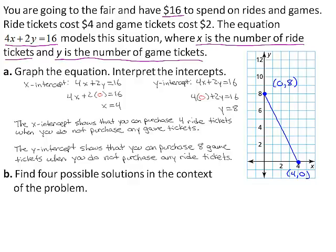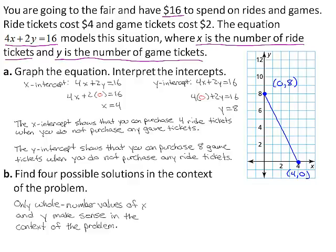Part B, find 4 possible solutions in the context of the problem. Because you cannot purchase part of a ticket, only whole number values of x and y make sense in the context of the problem.